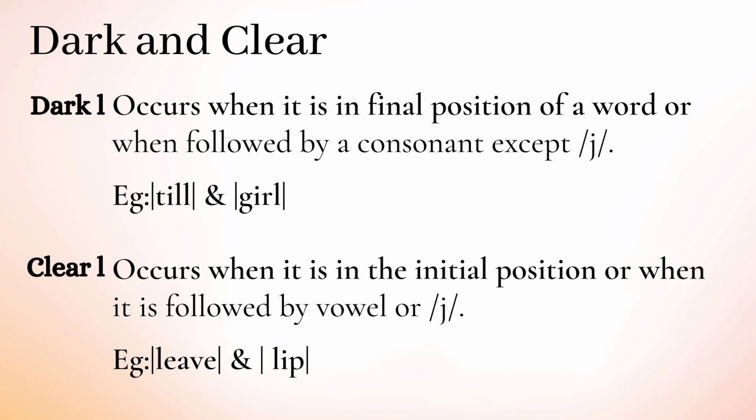The next important topic is dark L and clear L. The dark L and clear L are two varieties of the sound /l/. Dark L occurs when it is in the final position of a word or when followed by a consonant sound, as in 'till' and 'girl.' The clear L occurs when it is in the initial position of a word or when it is followed by a vowel or semi-vowel, as in 'leaf' and 'lip.'